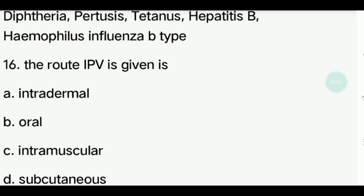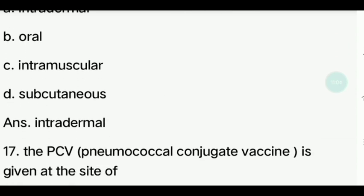Fifteenth question. What is the route of administration for the BCG vaccine? Options: Intradermal, Oral, Intramuscular, Subcutaneous. Answer is Intradermal.